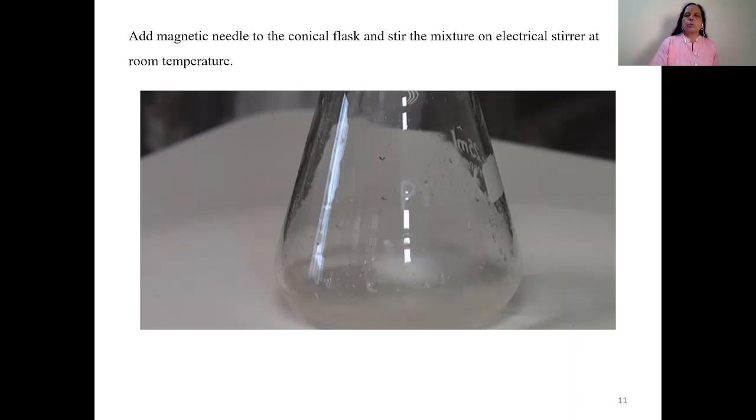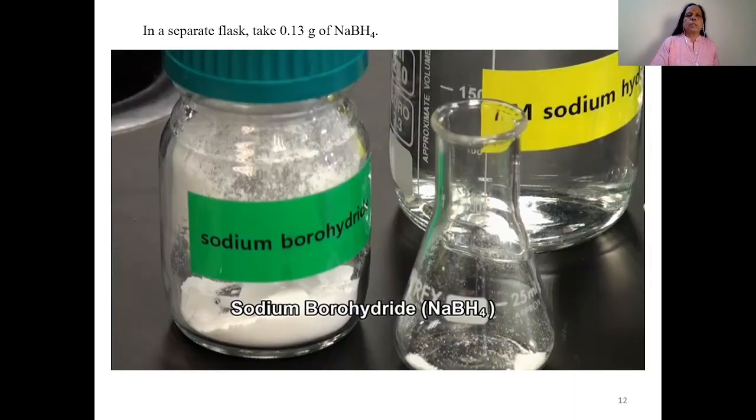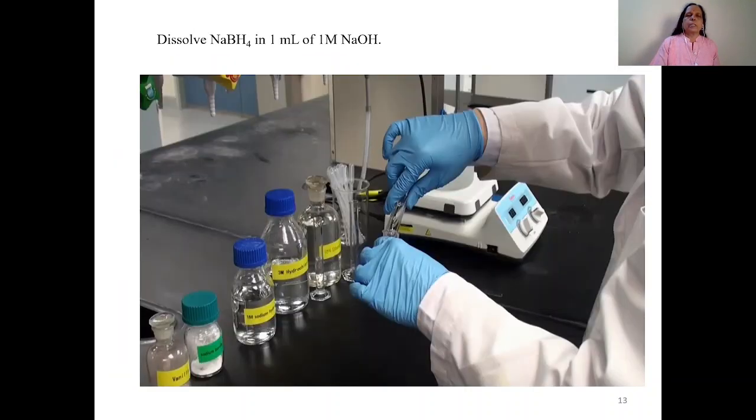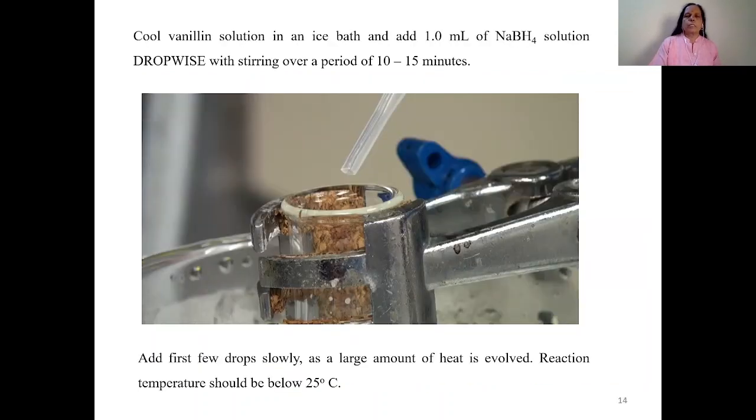Add magnetic needle to that conical flask and stir this mixture on electrical stirrer at room temperature. Now in another flask, take 0.13 gram of sodium borohydride and dissolve that in 1 ml of 1 molar sodium hydroxide. Now the first flask, that is vanillin solution flask, you have to cool that in ice bath. And to that add sodium borohydride solution dropwise. Remember you have to do addition of that sodium borohydride dropwise with stirring over a period of 10 to 15 minutes. Remember this reaction is exothermic, heat is evolved. So cool that solution in ice bath and then stir it.